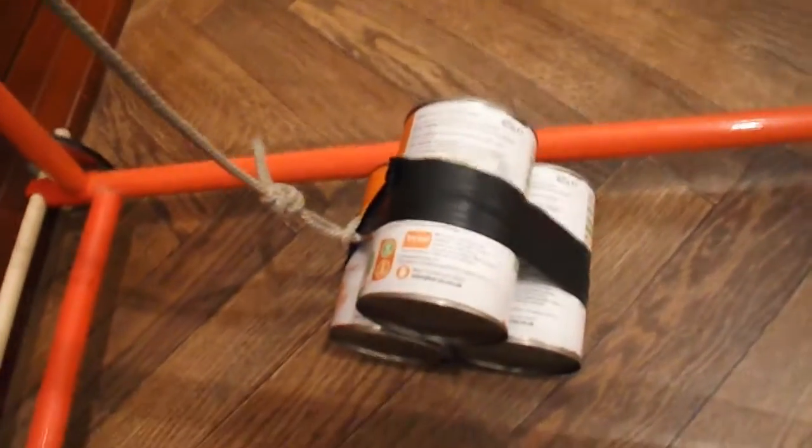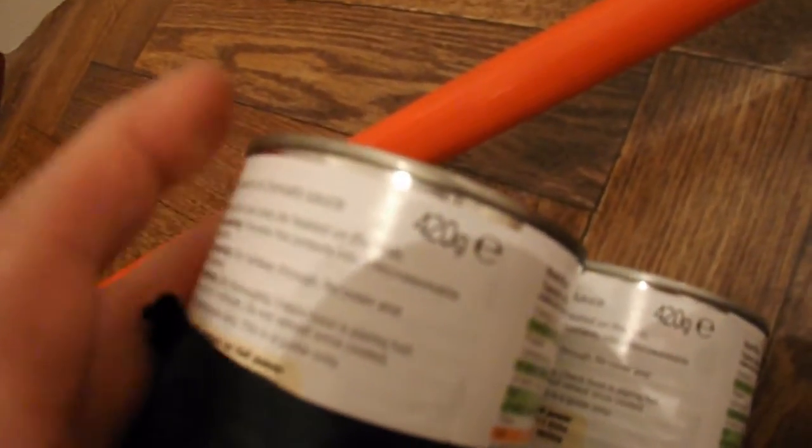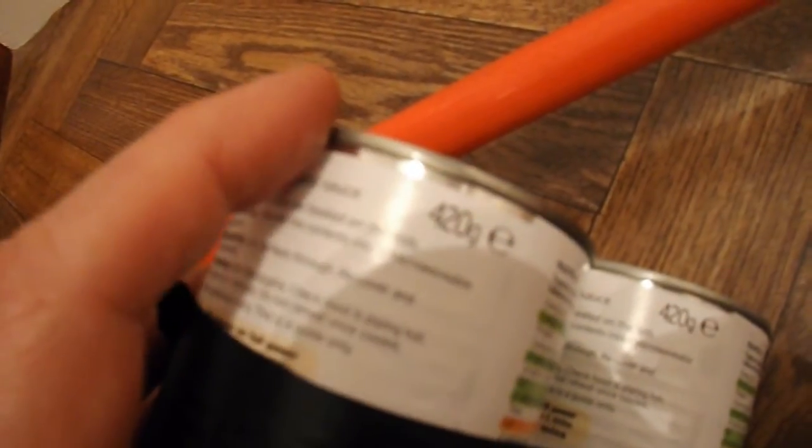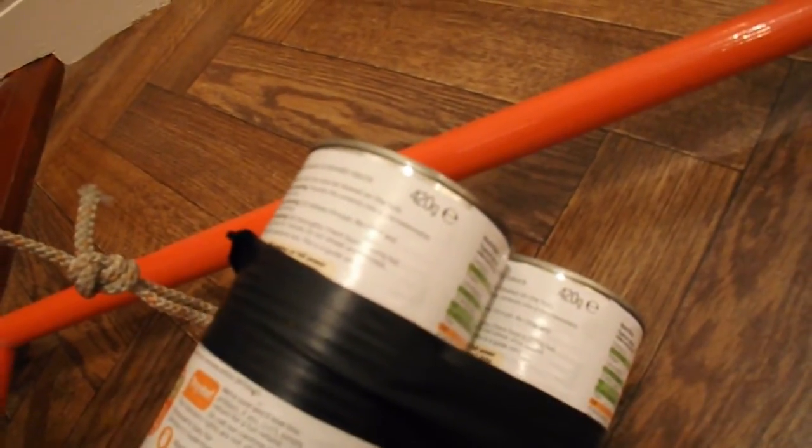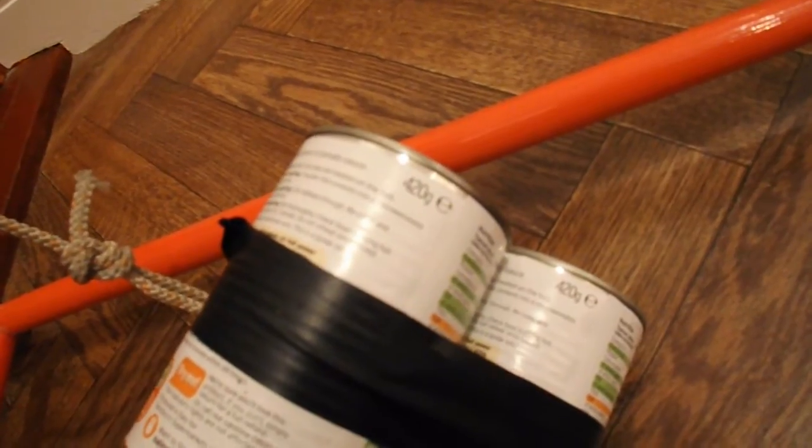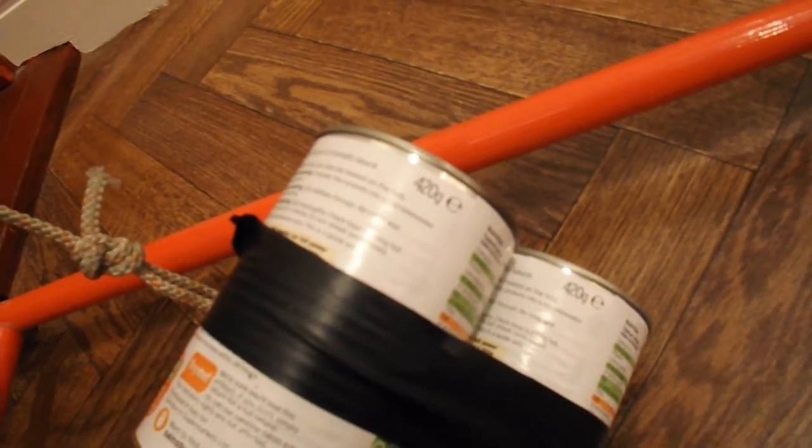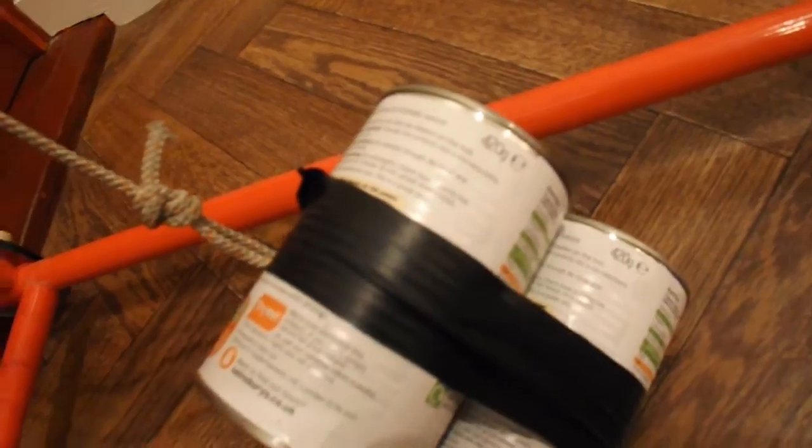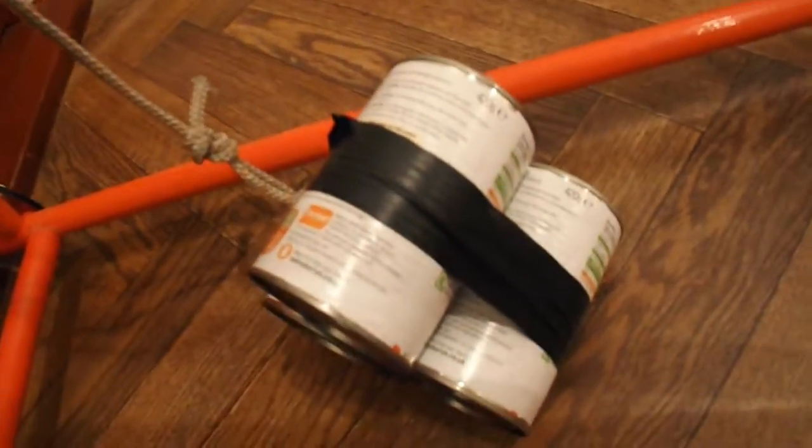The weight that I've used is tins of beans and they're, hopefully that's in focus, 420g. I've used three of them. So three fours, 1,200g, or 1,260g to be exact. So it's just over the 1kg weight.